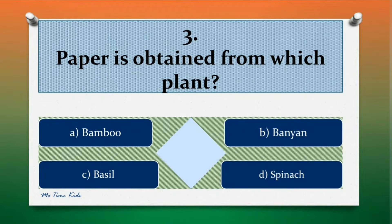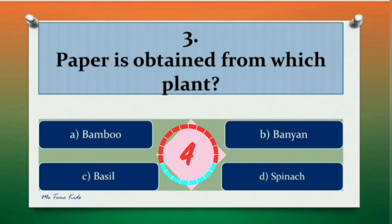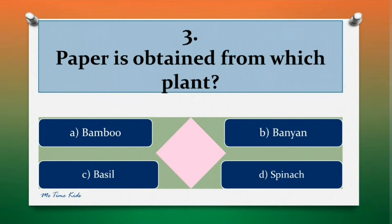Question 3. Paper is obtained from which plant? Options are: a. Bamboo, b. Banyan, c. Basil, d. Spinach. Correct answer is a. Bamboo.